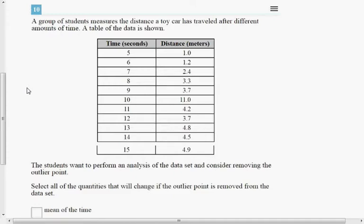Number 10 says a group of students measures the distance a toy car has traveled after different amounts of time. A table of the data is shown. The students want to perform an analysis of the data set and consider removing the outlier point. Select all of the quantities that will change if the outlier point is removed from the data set.